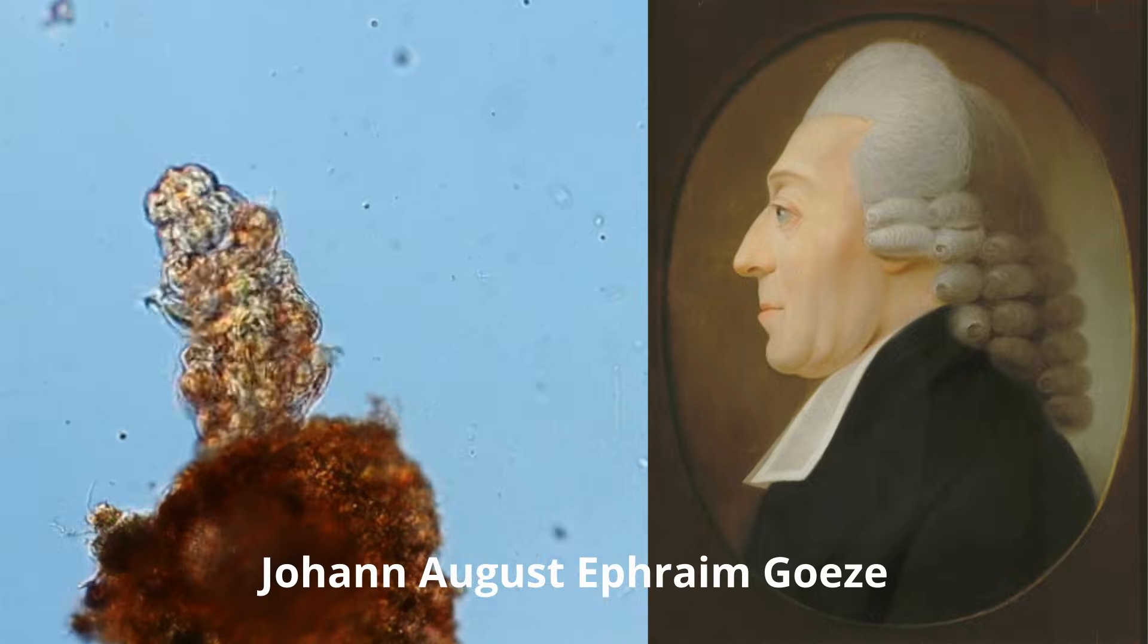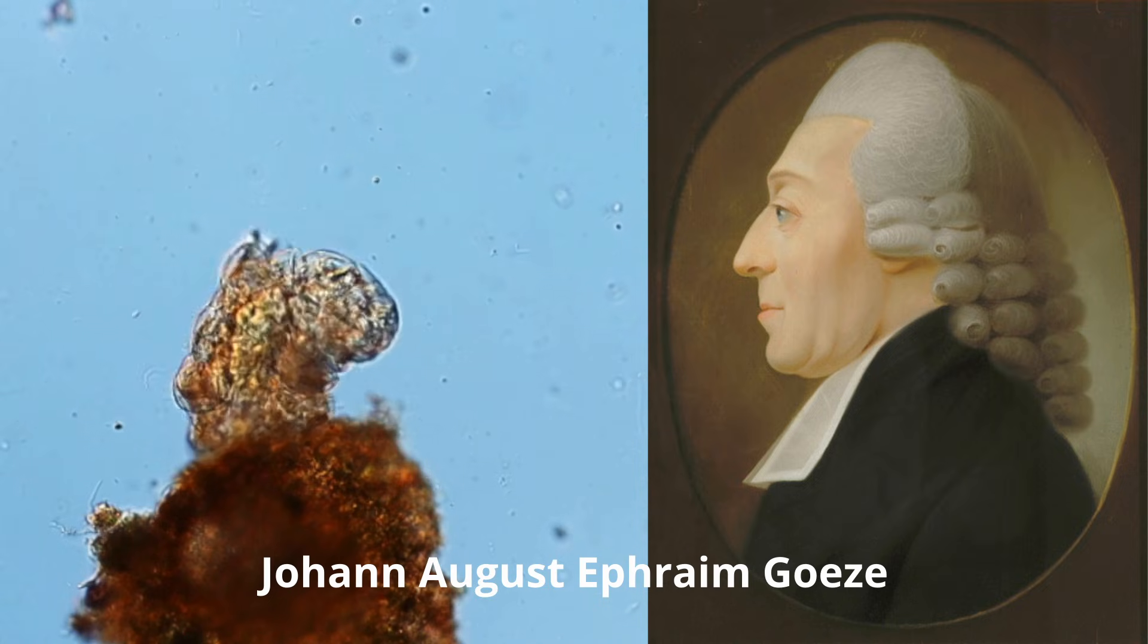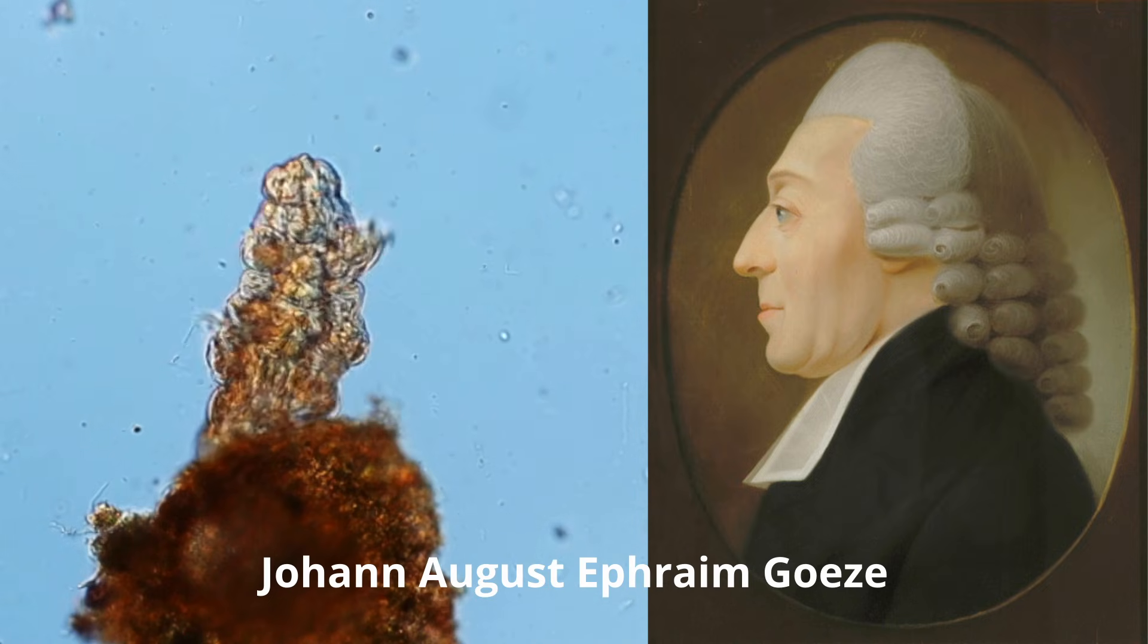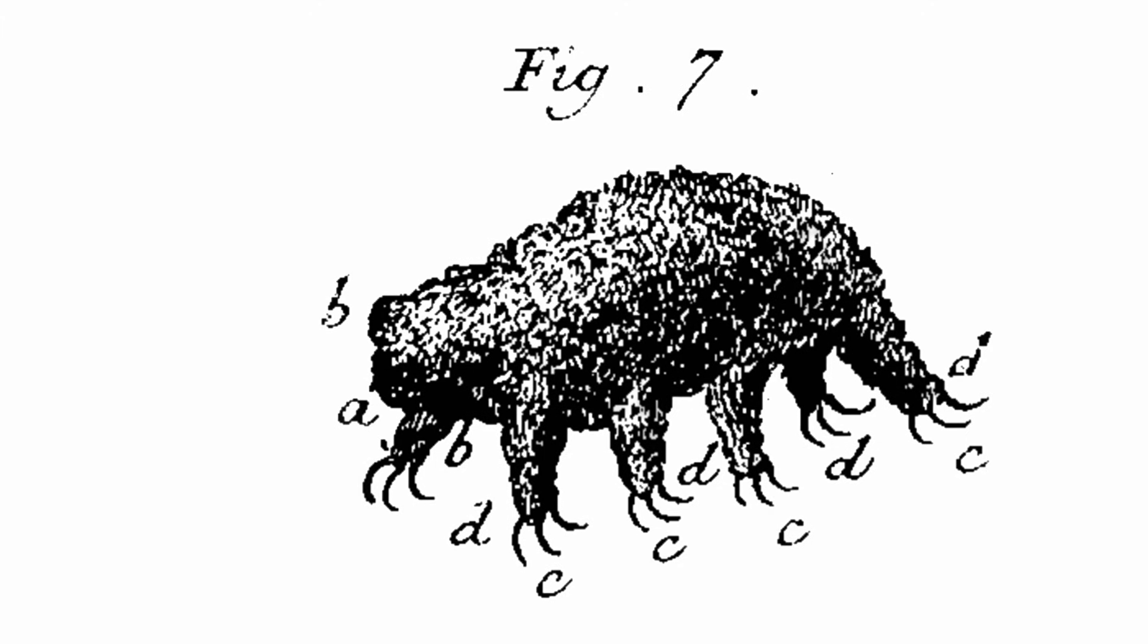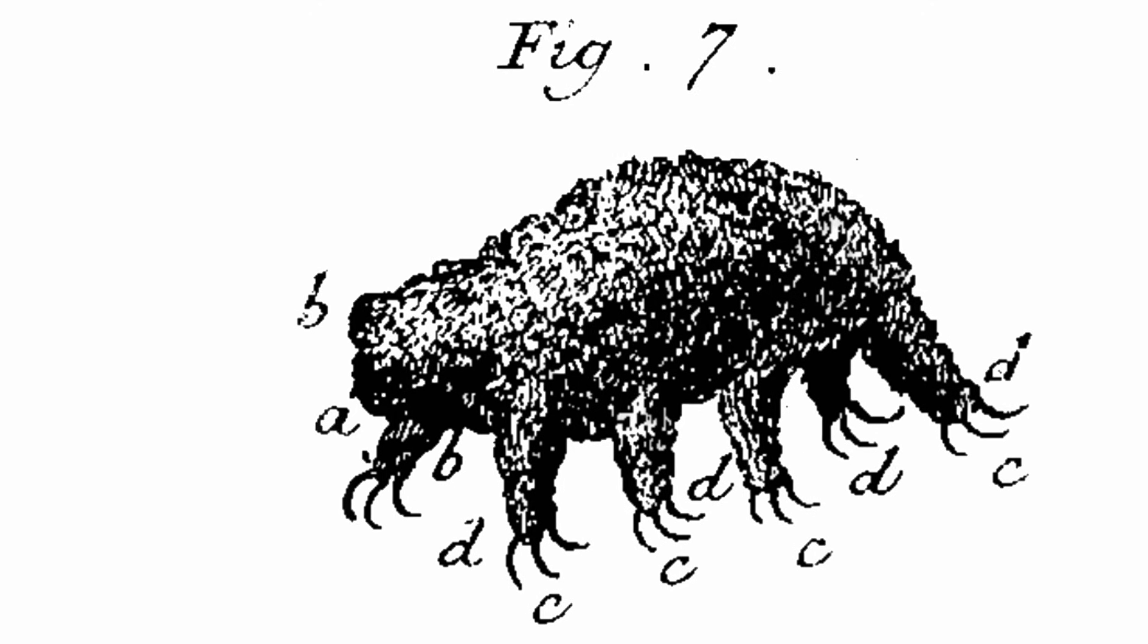Now, if we go back in time, the first person who discovered it was a researcher called Goese, Johann August Ephraim Goese, what a name. He was a German zoologist. And in 1773, with his microscope, he was actually able to already observe them. And he made drawings. And he also realized they were quite clumsy a little bit. And after watching the tardigrades for a while, I totally get why he actually said that, because they bumble around, they cling, they like to cling to things, trying to hold on to something.